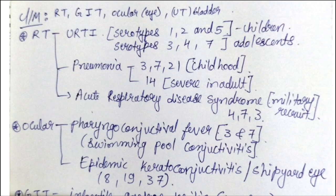These are different serotypes — different types of adenovirus. They also cause pneumonia: serotypes 3, 7, and 21 in childhood, and serotype 14 causes severe pneumonia in adults. Acute respiratory disease syndrome is seen in military recruits, caused by serotypes 4, 7, and 3.